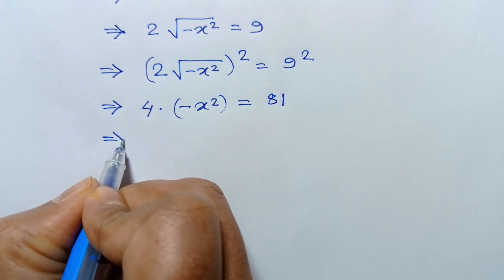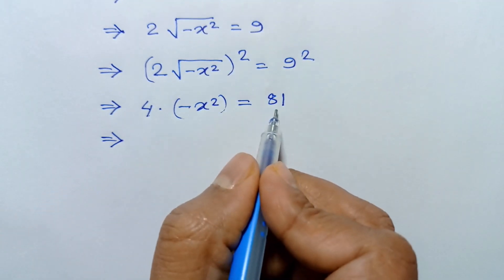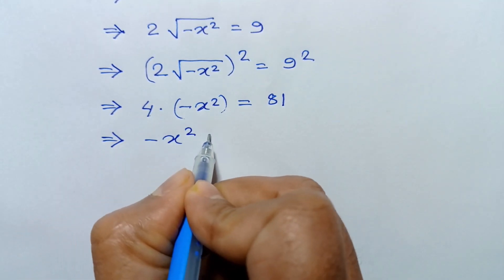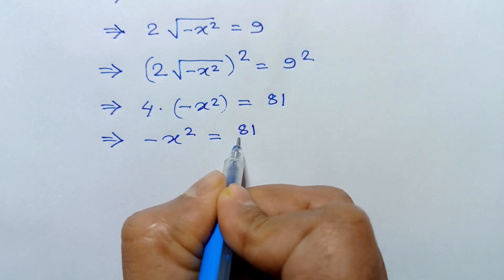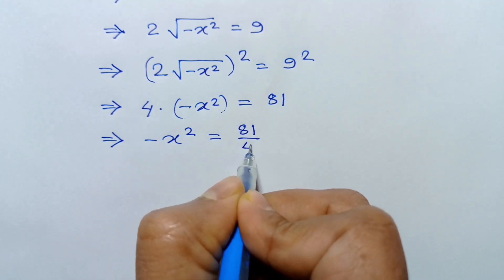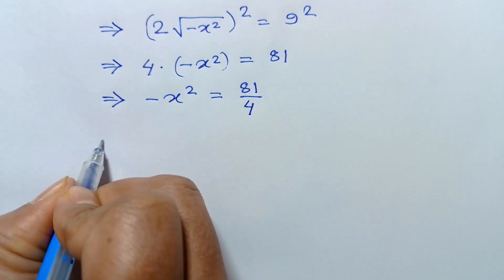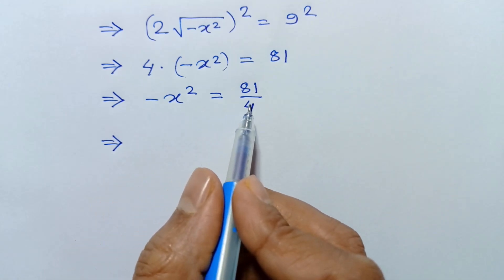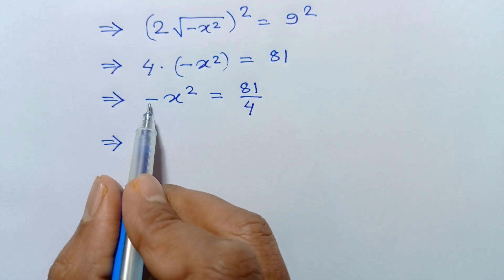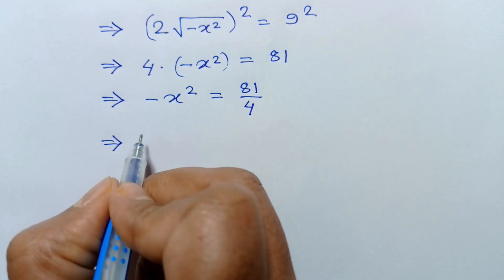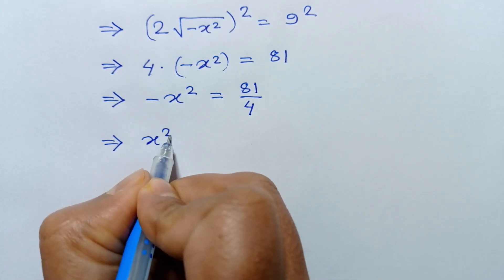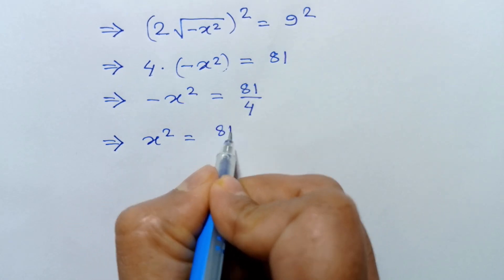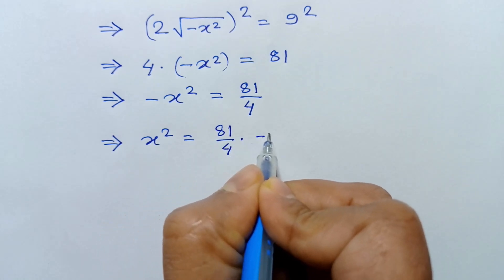Dividing both sides by 4, we get negative x squared is equal to 81 over 4. Now multiplying both sides by negative one, negative x squared times negative one gives positive x squared, equal to negative 81 over 4.